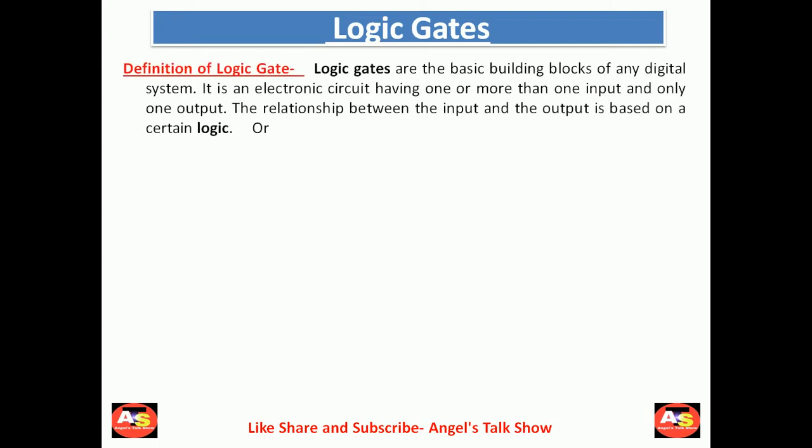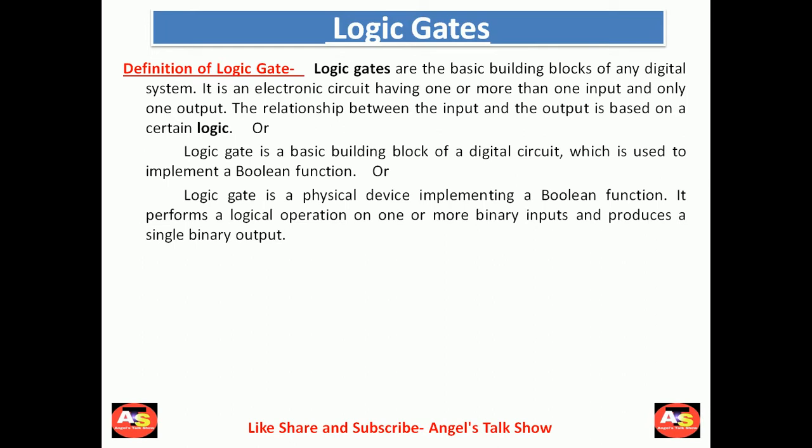In this first slide, I will discuss the definition of logic gates. Logic gates are the basic building blocks of any digital system. It is an electronic circuit having one or more inputs and only one output. The relationship between input and output is based on certain logic. Another definition: a logic gate is a basic building block of a digital circuit used to implement a boolean function. It is also a physical device implementing a boolean function — it performs a logical operation on one or more binary inputs and produces a single binary output.